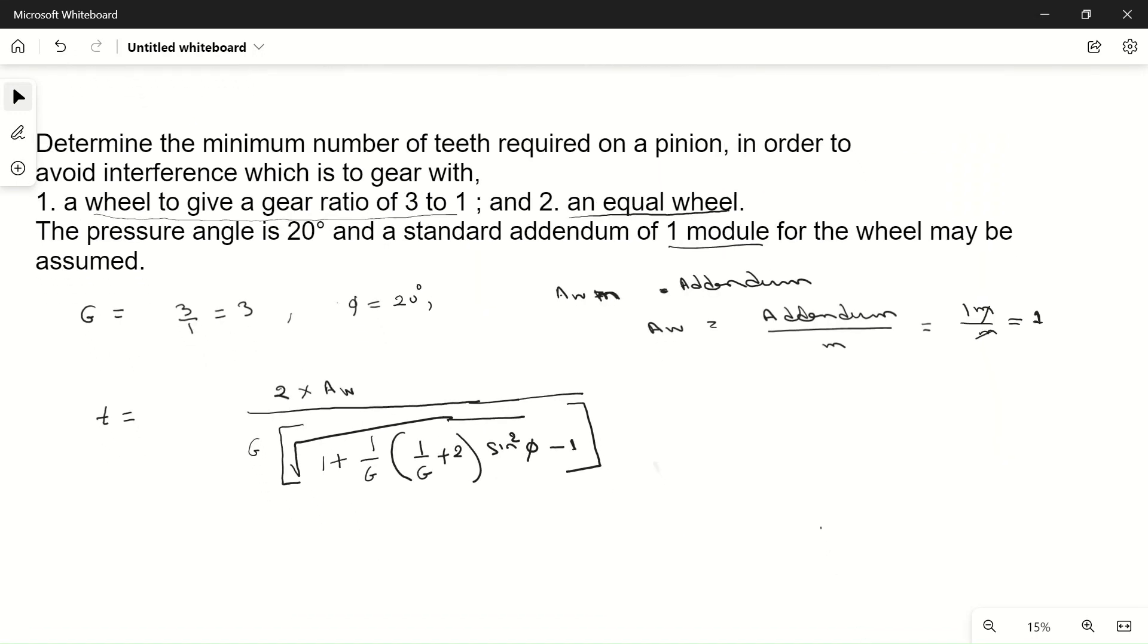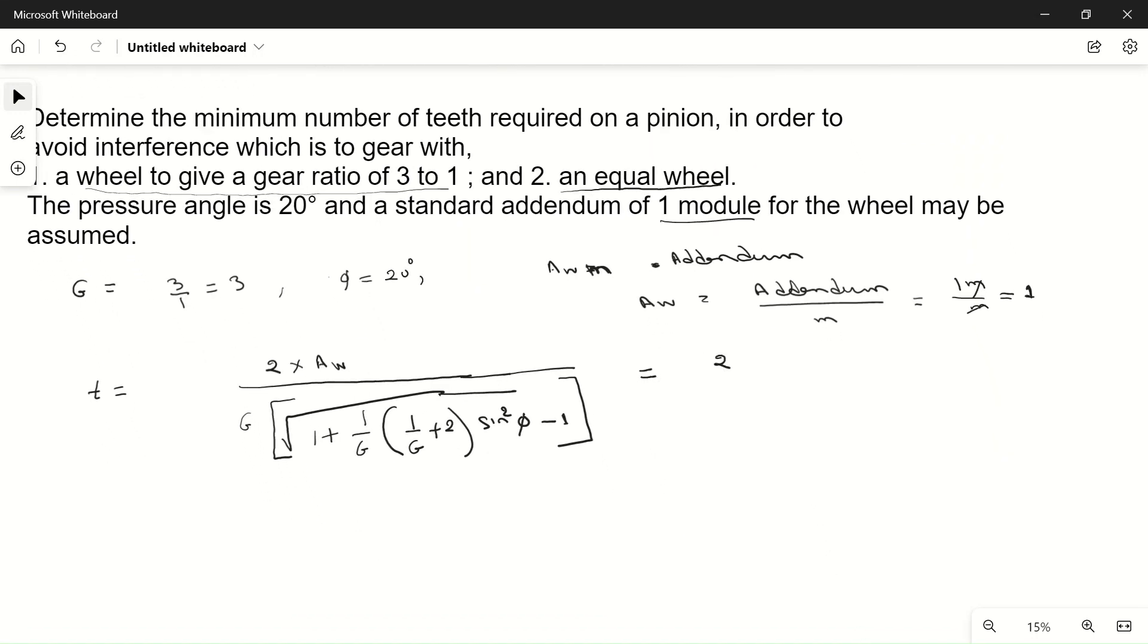If you put the values: equals 2 times 1 divided by G—gear ratio is 3—times the square root of [1 plus 1/3 times (1/3 plus 2) times sine squared 20 degrees], minus one.